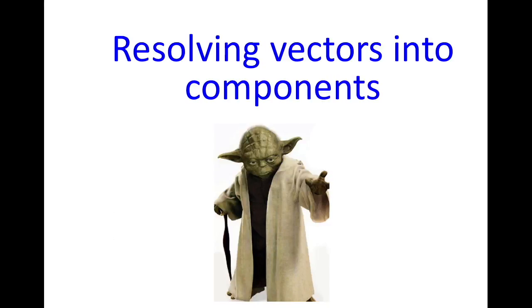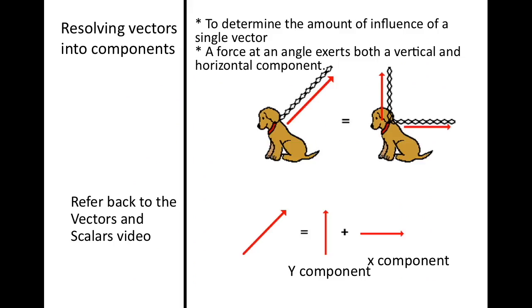We are going to be talking about resolving vectors into components for tension, for example. To determine the amount of influence of a single vector, a force at an angle exerts both a vertical and horizontal component. There's a force pulling at a certain angle. Find the x and the y components.